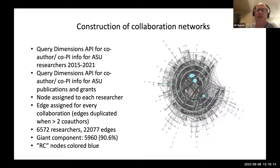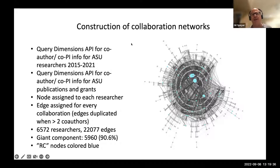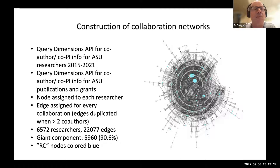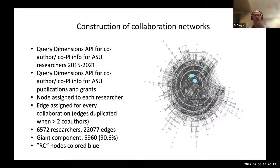The figure on the right is an ASU-only network — only Arizona State researchers, compiled over the span of 2015 to 2021. Every circle in this network is a researcher, and every edge between circles is a collaboration of some sort — either a publication written as co-authorship, or a grant or award in which they were co-PIs. We queried the Dimensions API to pull out all of these types of collaborations and constructed this network.